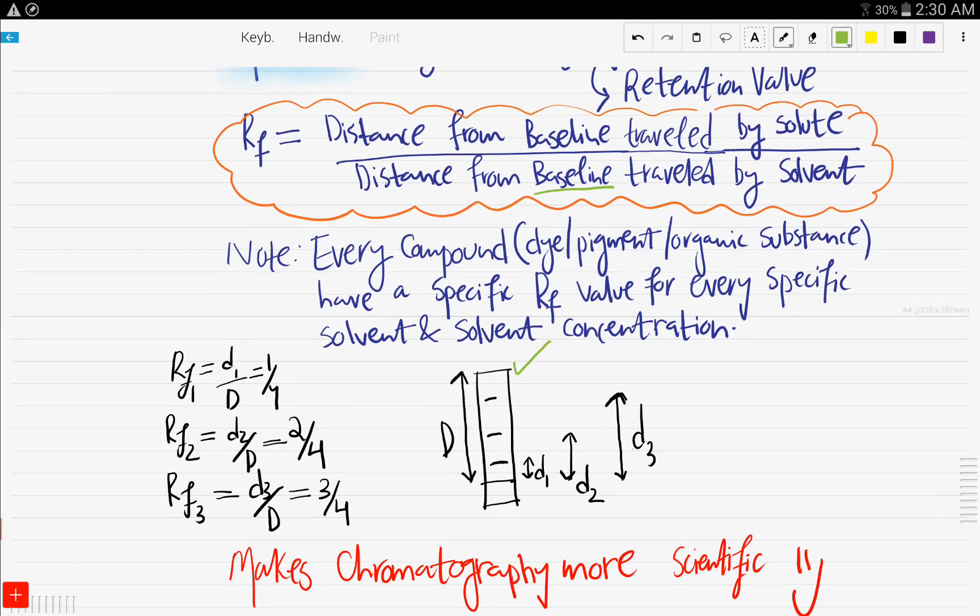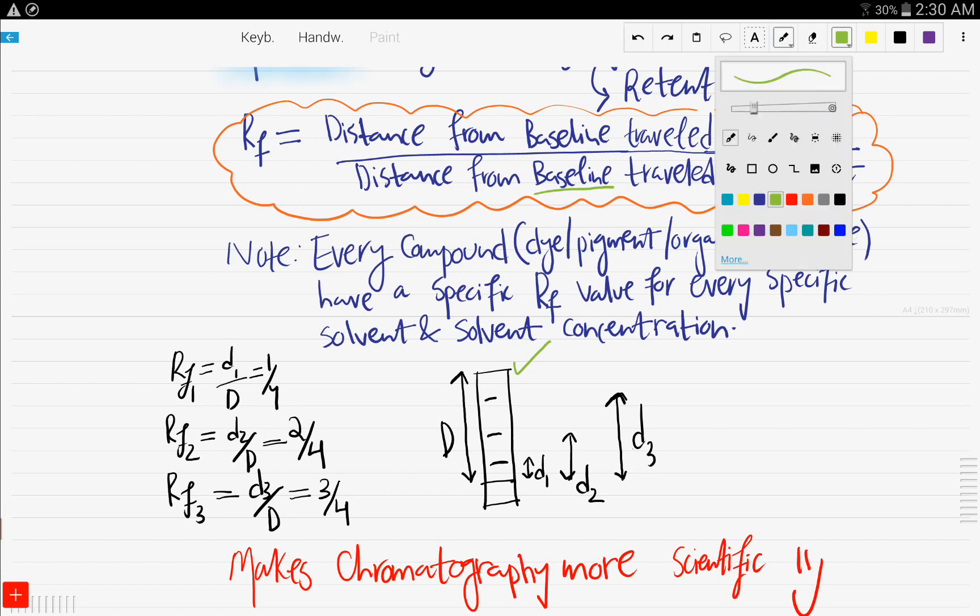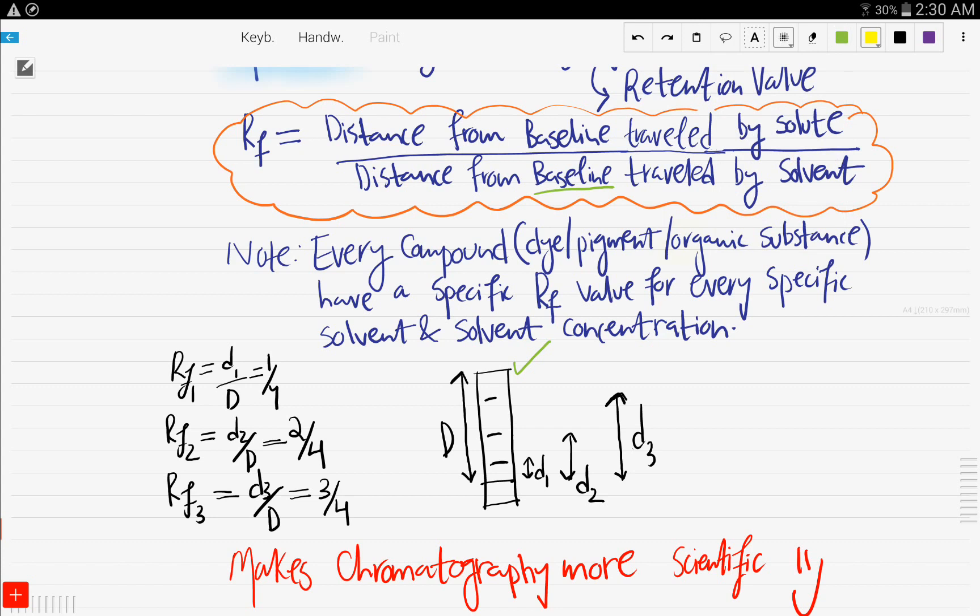And every compound, whether it's a dye, a pigment, an organic substance, in our case, it's an organic substance, the amino acids. So every compound have a specific RF, just like we said that every pure amino acid have a certain chromatogram. Every dye pigment or organic substance have a certain retention value for every specific solvent, of course. And for every specific solvent concentration, because it's going to differ if it's in a different solvent, because maybe in another solvent, it will travel more or less.